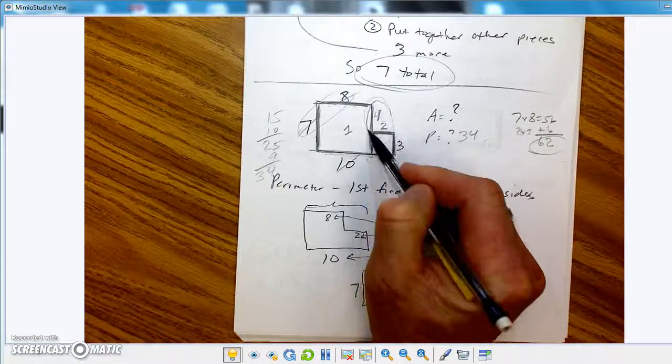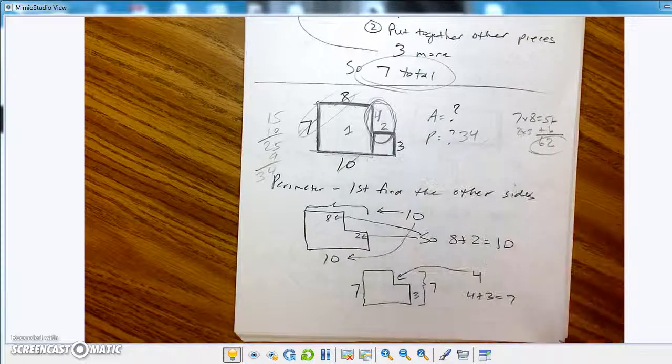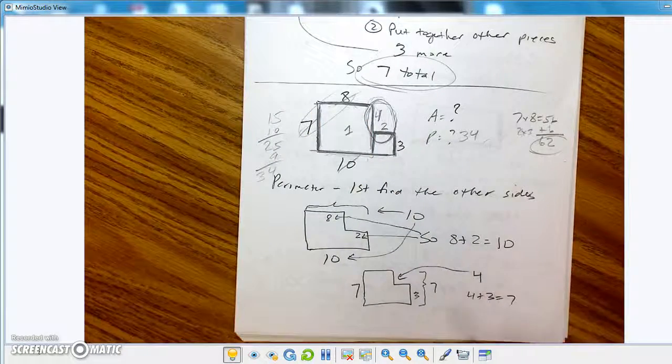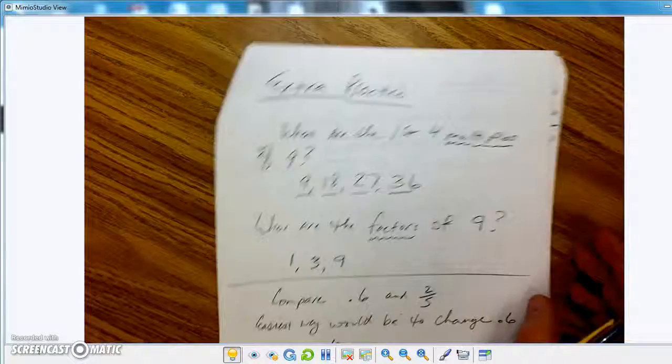But basically, it's this. You've got to find, if you want to find the perimeter, you've got to find out what those edges were. And so, just start looking around at your pieces. And that's it.